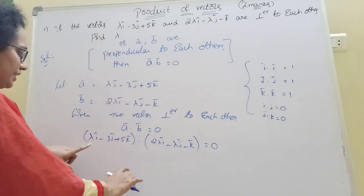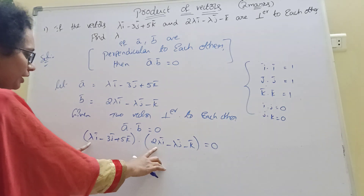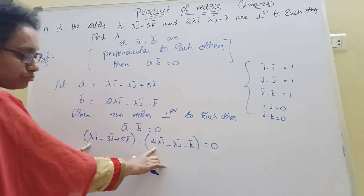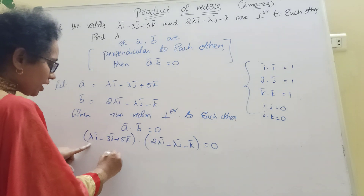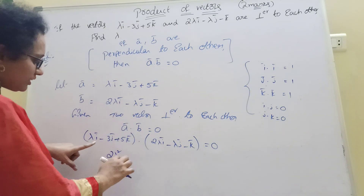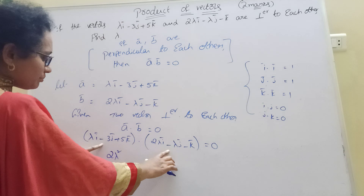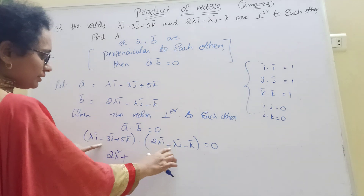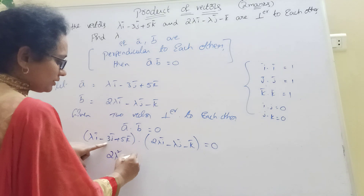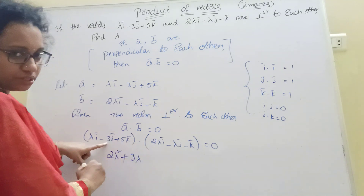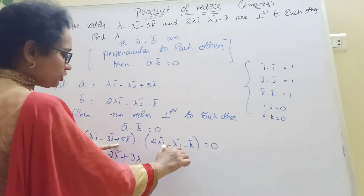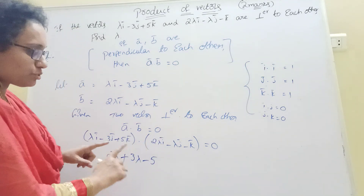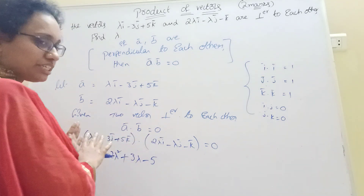Now expanding the dot product: i dot i is 1, so the i-component gives 2 lambda squared. Then minus 1 from the k dot k term. Then plus 3 lambda from the j dot j term.